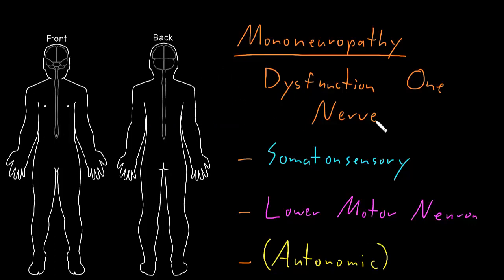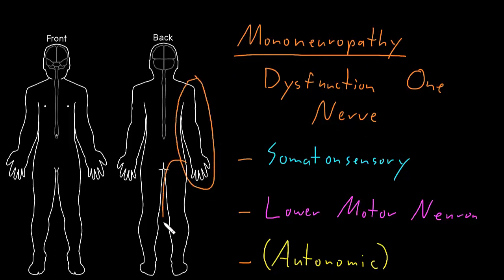Theoretically, you can have dysfunction of any nerve of the peripheral nervous system, with somatosensory abnormalities of the skin and deep tissues it innervates, and or lower motor neuron abnormalities of the muscles it innervates. But in reality, certain nerves are most often affected by disorders causing mononeuropathy syndromes — several in the arms or legs. And this will usually be on just one side, so just one arm or one leg will be affected, although some are so common that the same nerve on both sides can be involved.